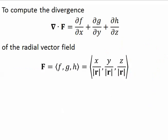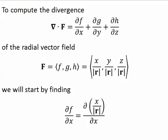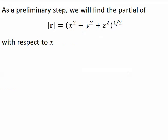To compute the divergence of the radial vector field, we're going to start by finding the partial with respect to x of the first component. To do that, as a preliminary step, we're going to find the partial of the magnitude of r.